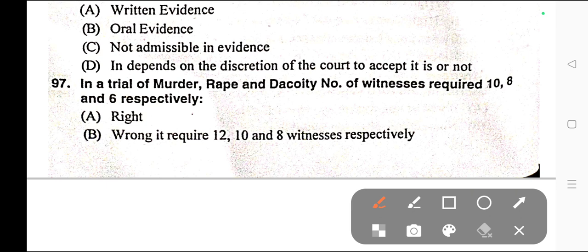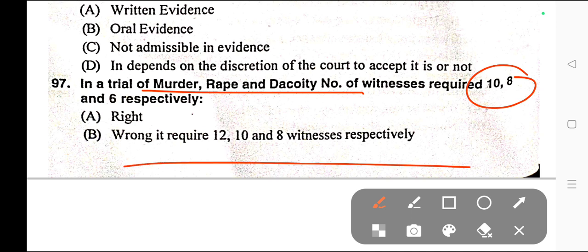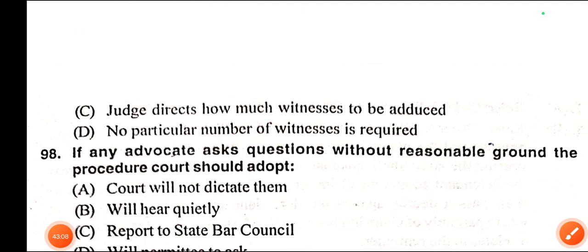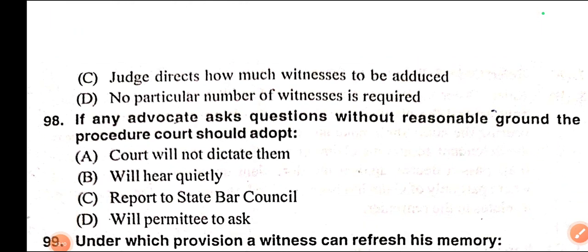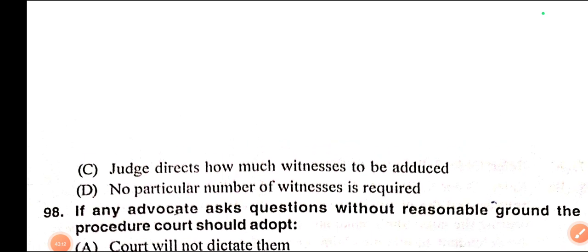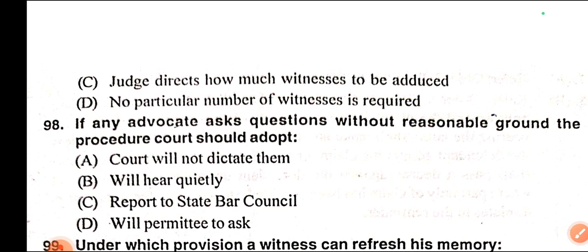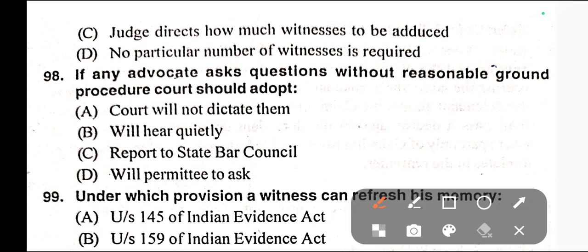Question number ninety-seven: In a trial of murder, rape, and dacoity, the number of witnesses required is 10, 8, and 6 respectively. Options: A) Right, B) Wrong — it requires 12, 8, 10 witnesses only, C) Judge decides how many witnesses to be adduced, D) No particular number of witnesses is required. Correct answer is option D — no particular number of witnesses is required.